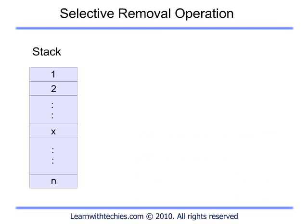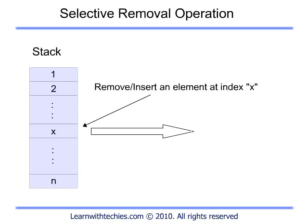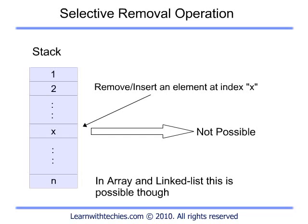You cannot do selective removal of an element of your choice from a stack. Selective removal is possible in data structures like array and linked list, where you can remove or insert an element at an index X. But that's not possible in a stack — elements are popped out in reverse order. In forthcoming slides we will see what that means.